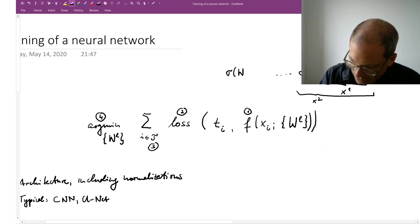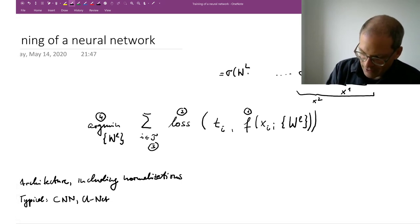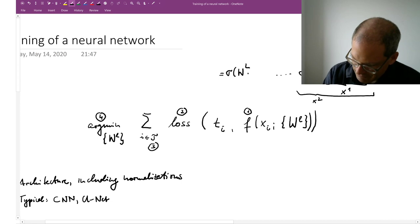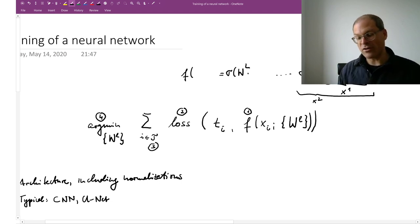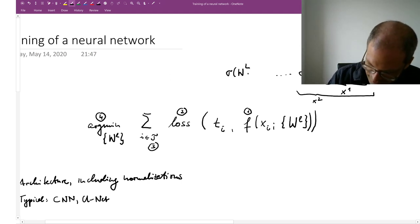Then we go on with these nested computations or nested dependencies until we have in the end the sigma W. Let's say we have capital L layers. The result is my estimate. A neural network is nothing other than a non-linear function that I fit into my data.